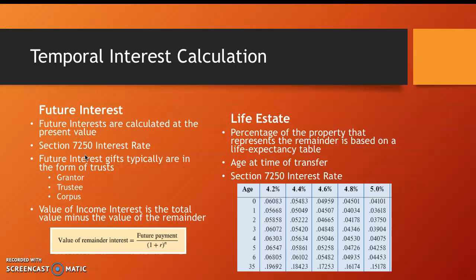That's well and good if we have the number of years, but what if the gift is based on the duration of a life? The discount rate in that case is based on some work done by our actuary buddies in the life expectancy chart. You can use the Section 7520 interest rate on the x-axis and the age at the time of the transfer of the gift on the y-axis to find your rate.